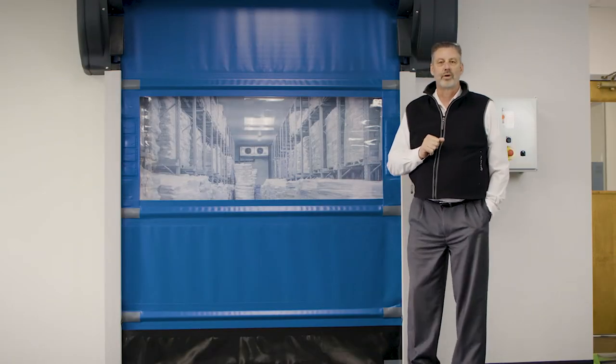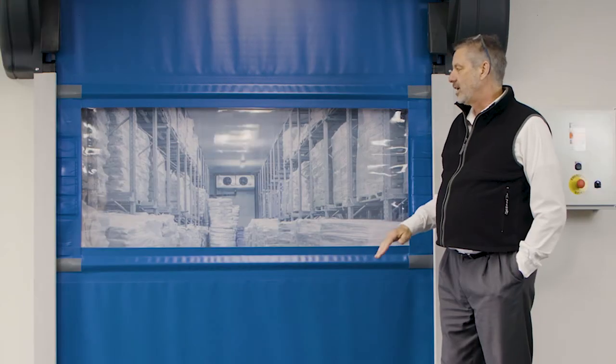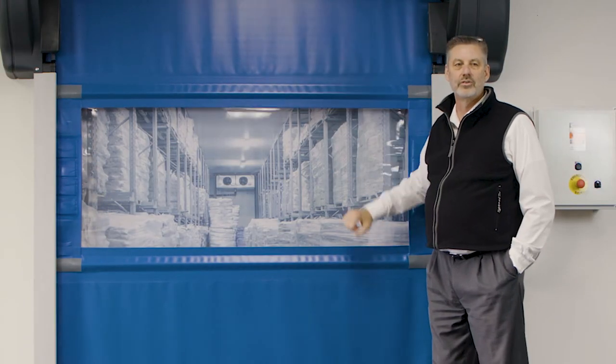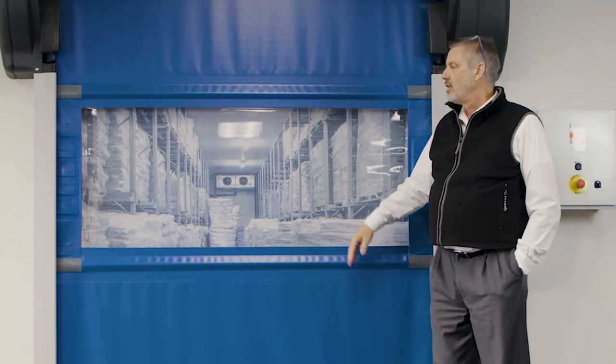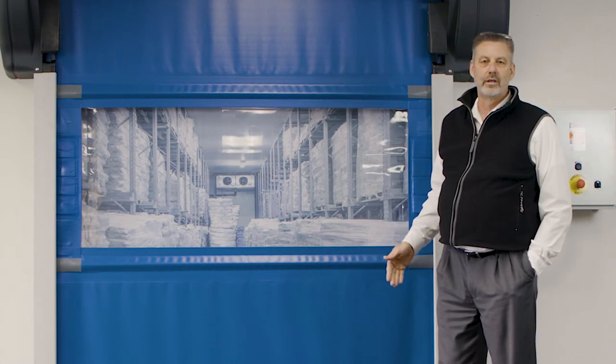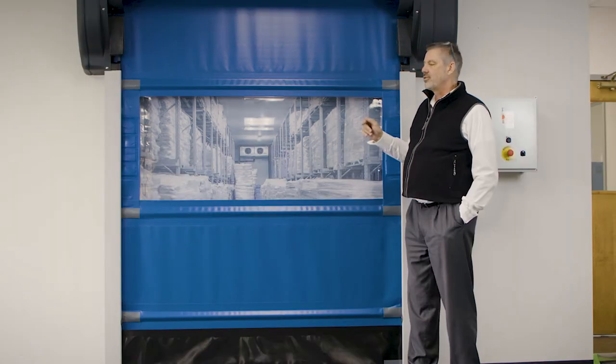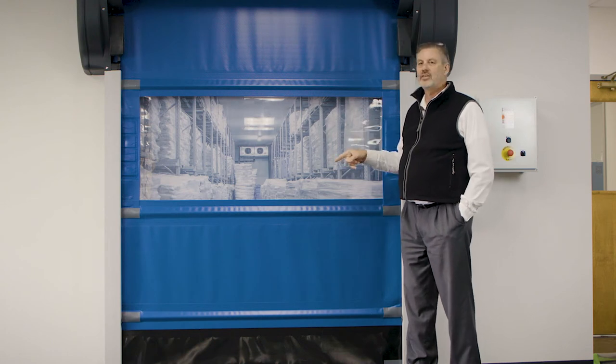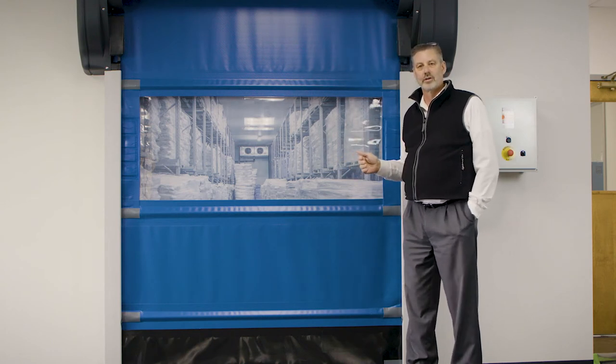The other thing that separates this door from the other doors in the market are the wind ribs. It gives us the ability to take high wind loads and pressure in a building. 30 inch standard on the R400. If the pressure is a little bit more inside of a building, we can go to 20 inch spacings and allow even more pressure on the door.